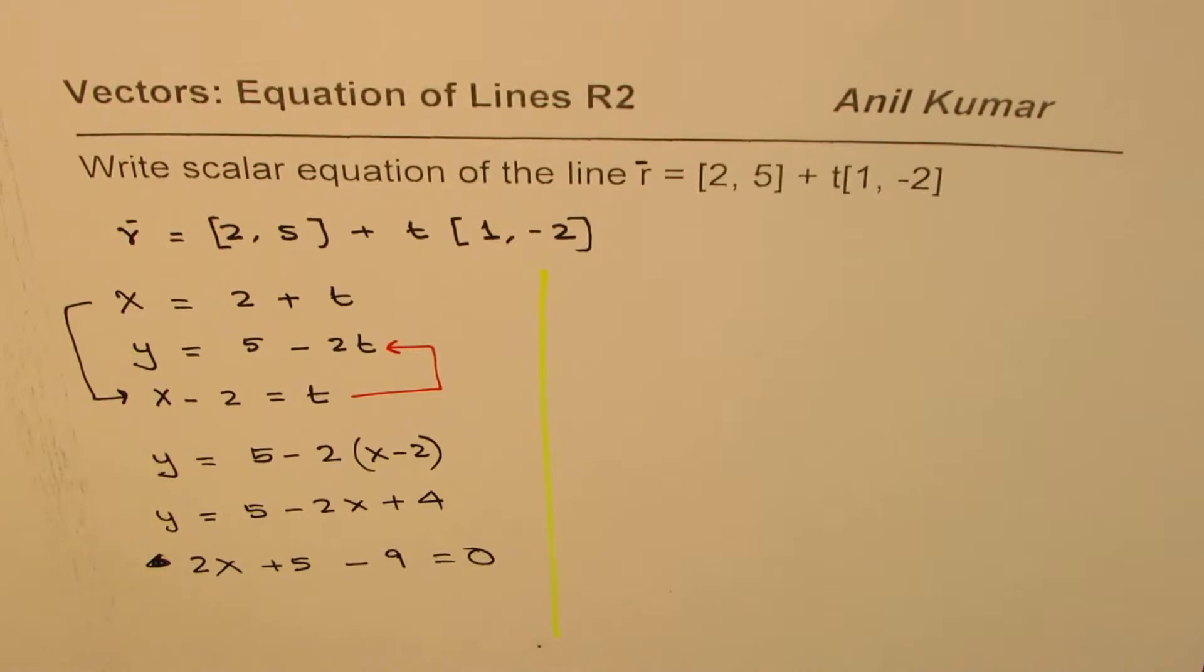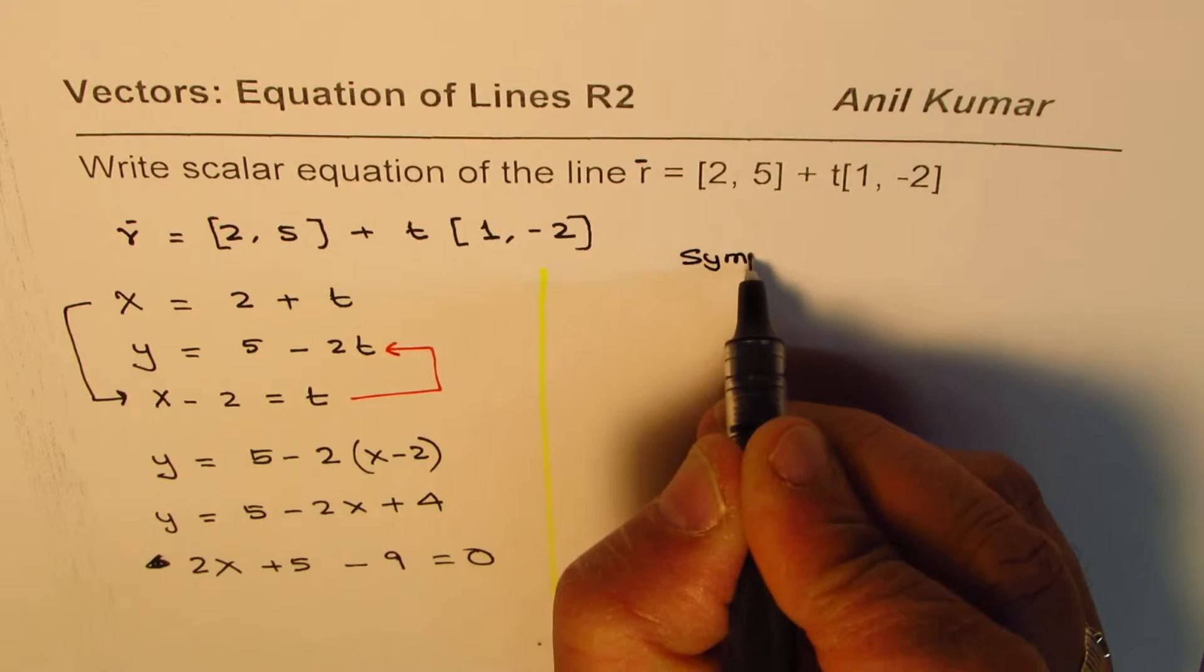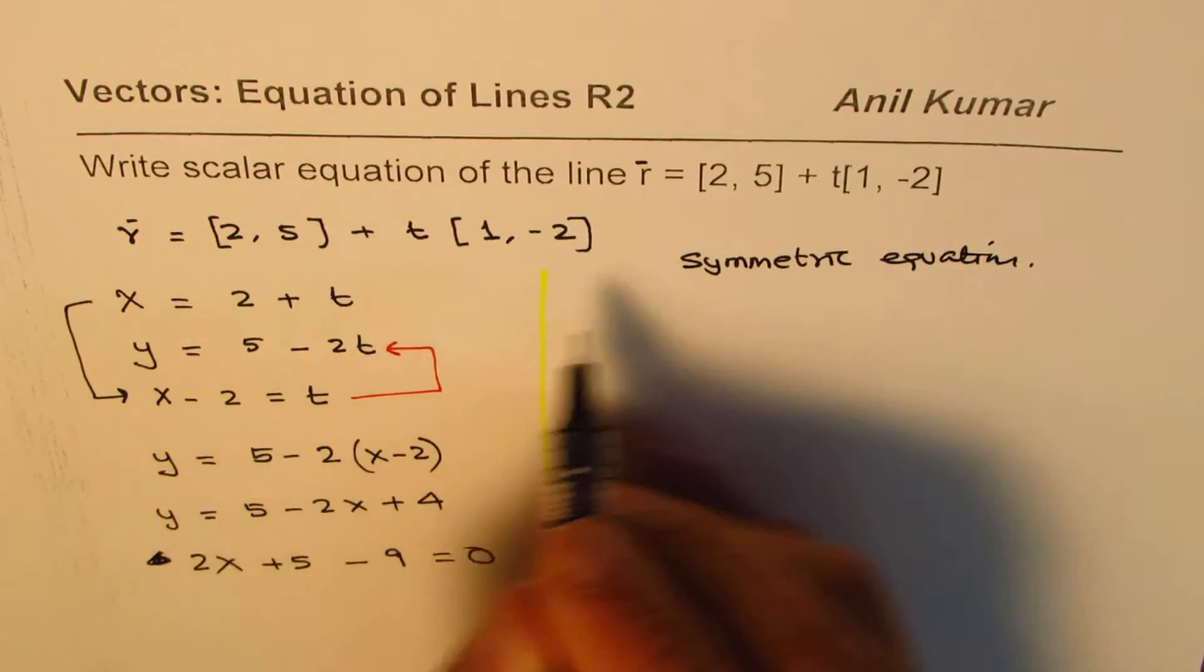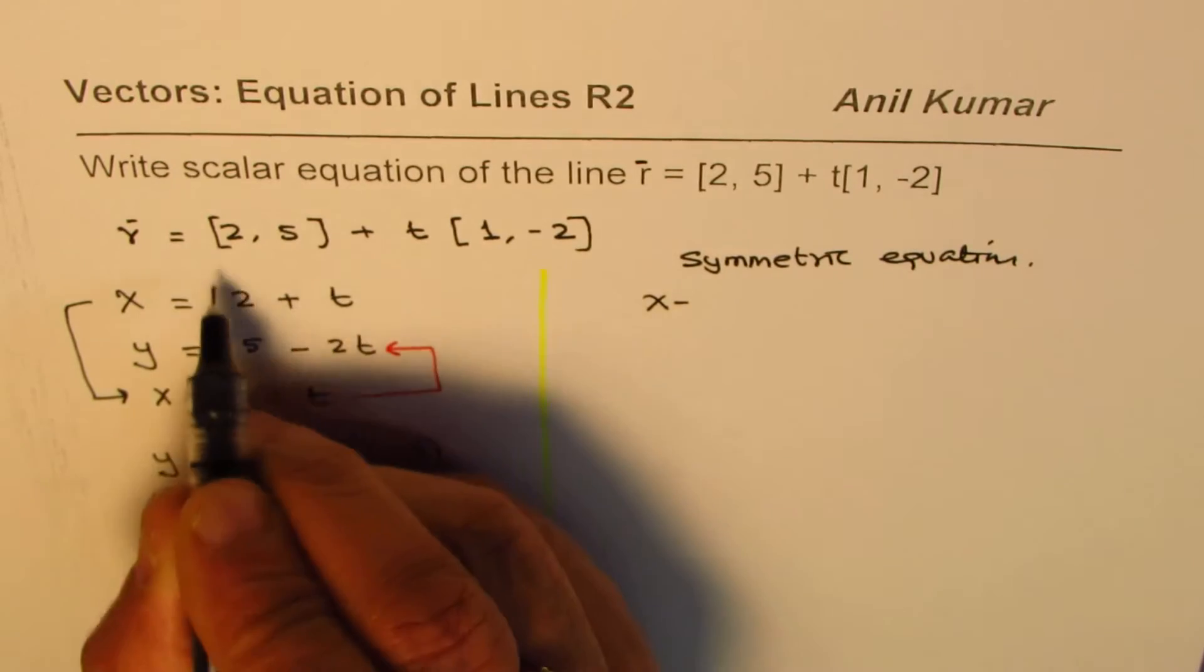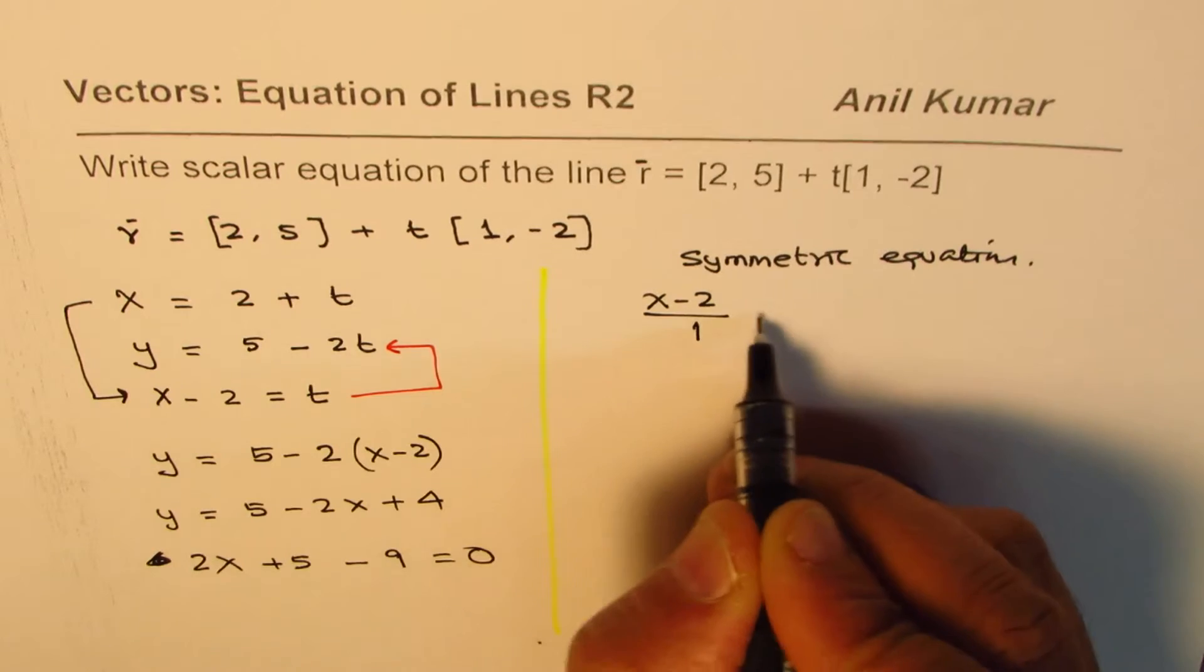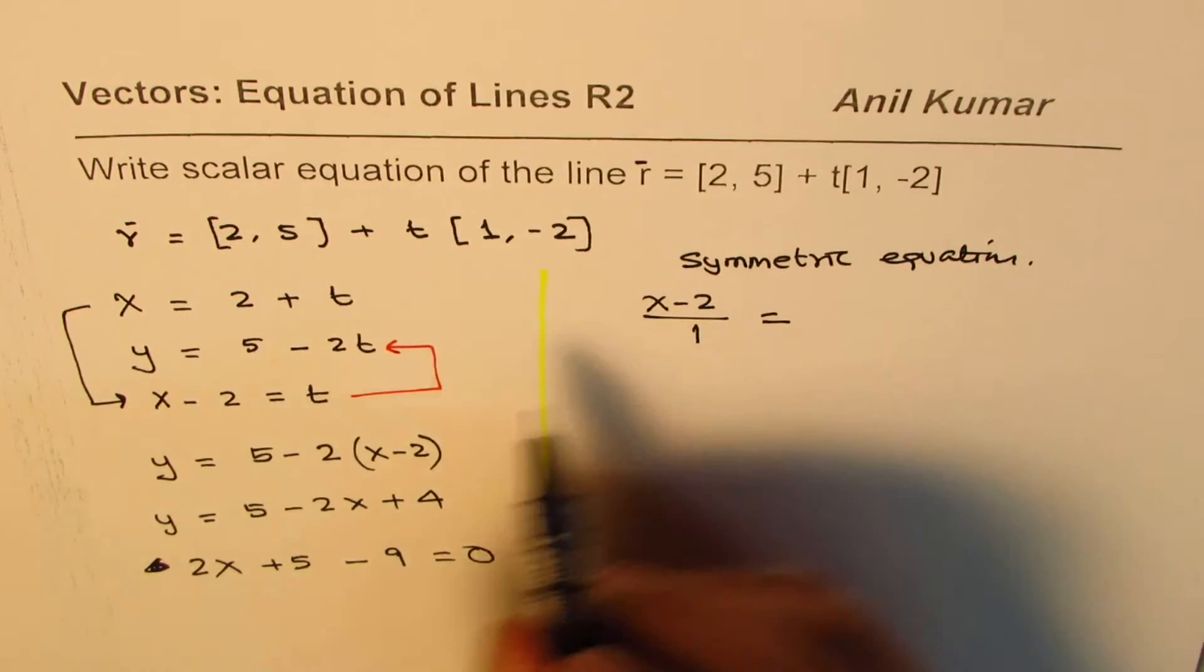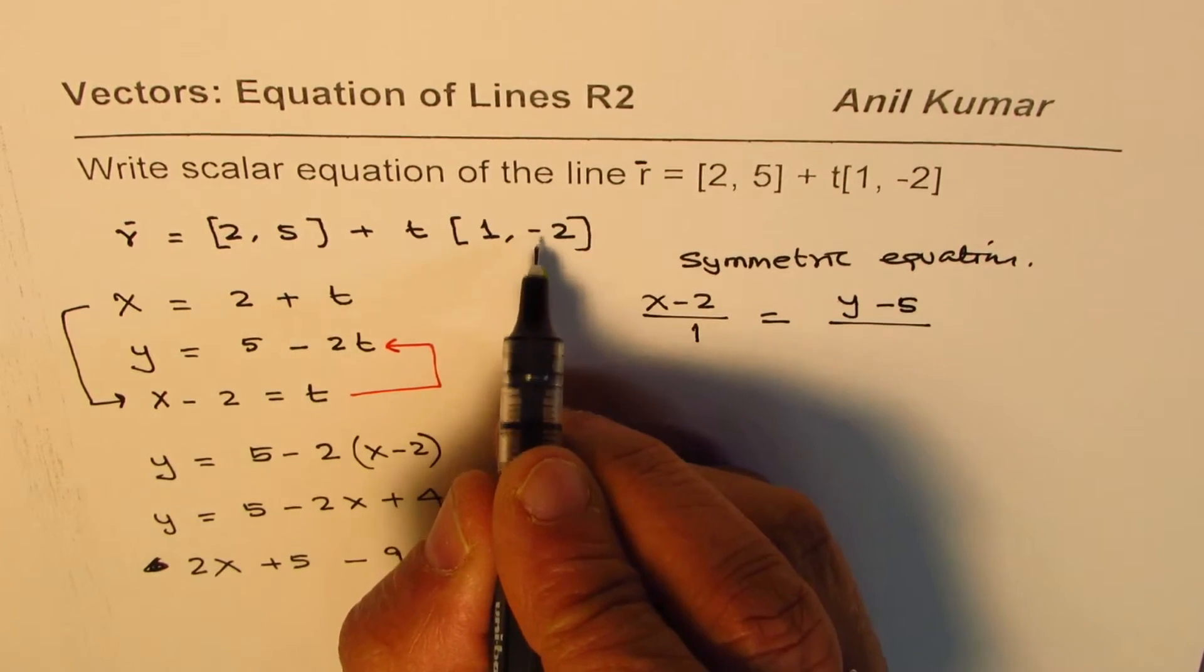The other way of doing the same thing is we could write this as a symmetric equation. Symmetric equation is (x minus 2) divided by the direction number 1 equals (y minus 5) divided by minus 2.